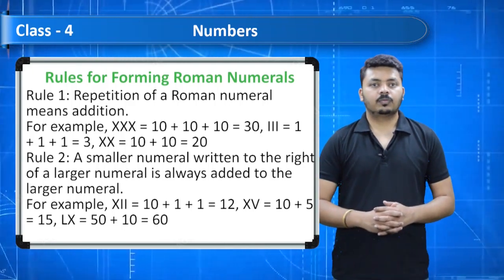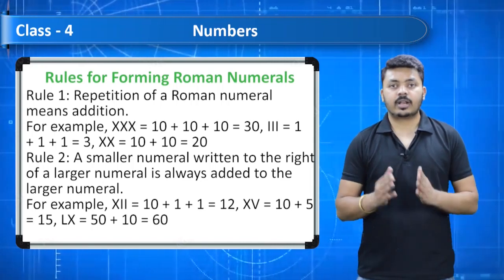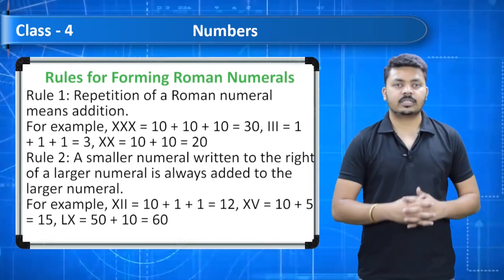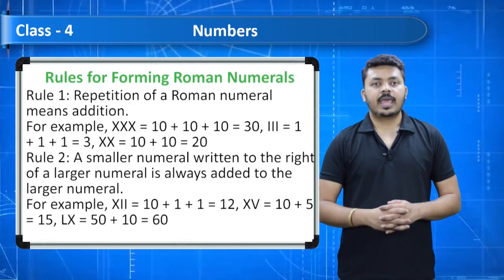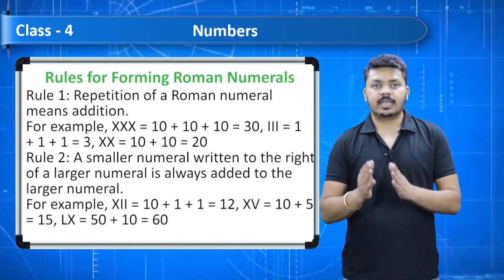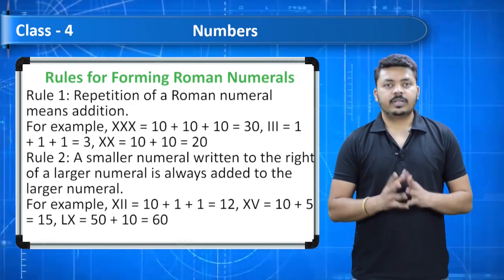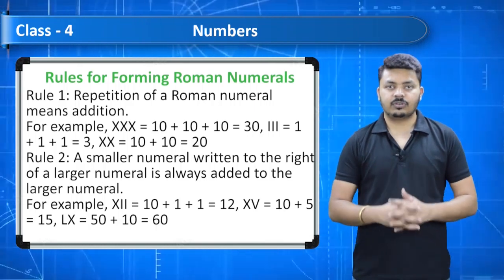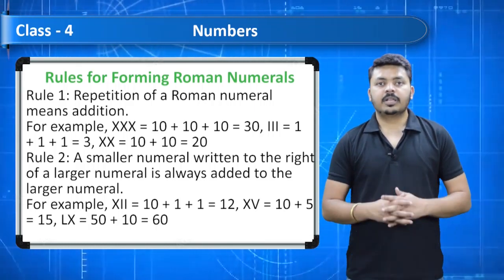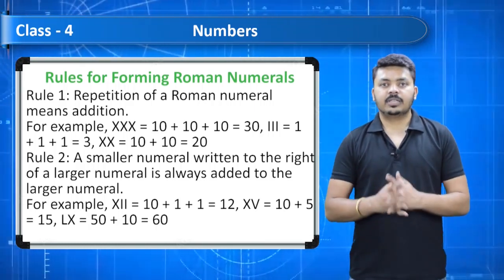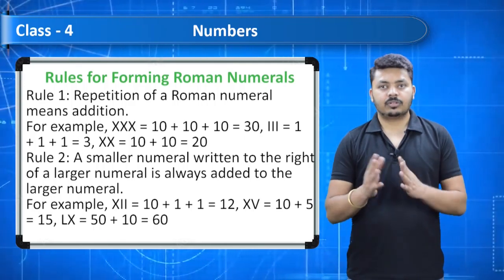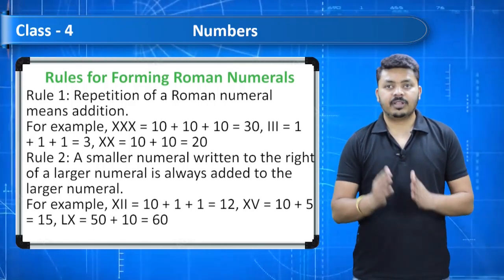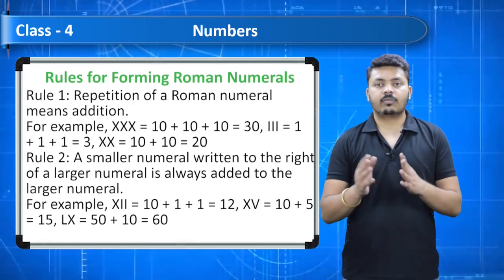Rule 2: a smaller numeral written to the right of a larger numeral is always added to the larger numeral. For example, XII = 10 + 1 + 1 = 12. XV = 10 + 5 = 15. LX = 50 + 10 = 60.